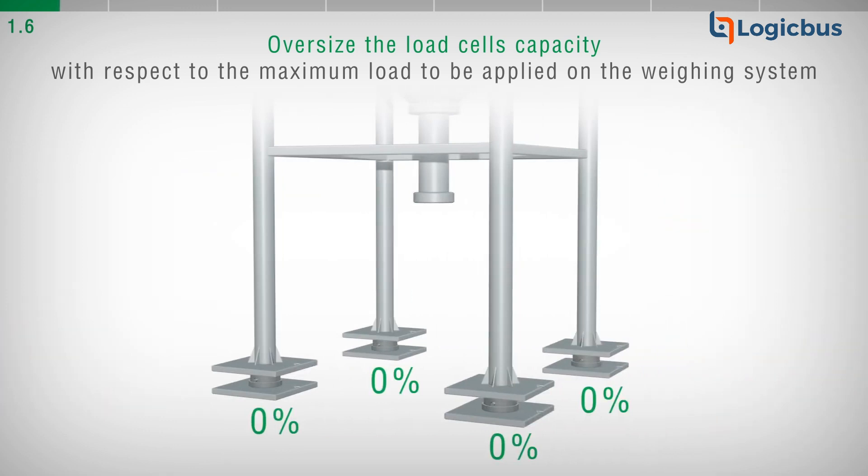In case of weighing structures with four supports, consider that the load will not be uniformly distributed and that 85-90% of the applied load will be distributed on just three supports.